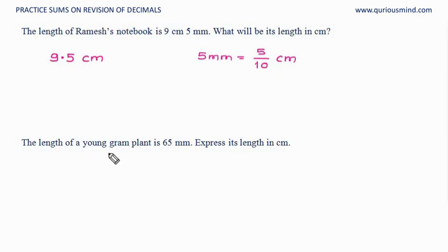The length of a young gram plant is 65 mm. Express its length in centimeter. 65 mm is equal to 65 upon 10 centimeter. If I want to convert it into decimal, first I will convert it into mixed fraction. 6 is a whole and then 5 tenths. 6 whole and 5 tenths. In the 10th place, 5. 6.5 centimeter.